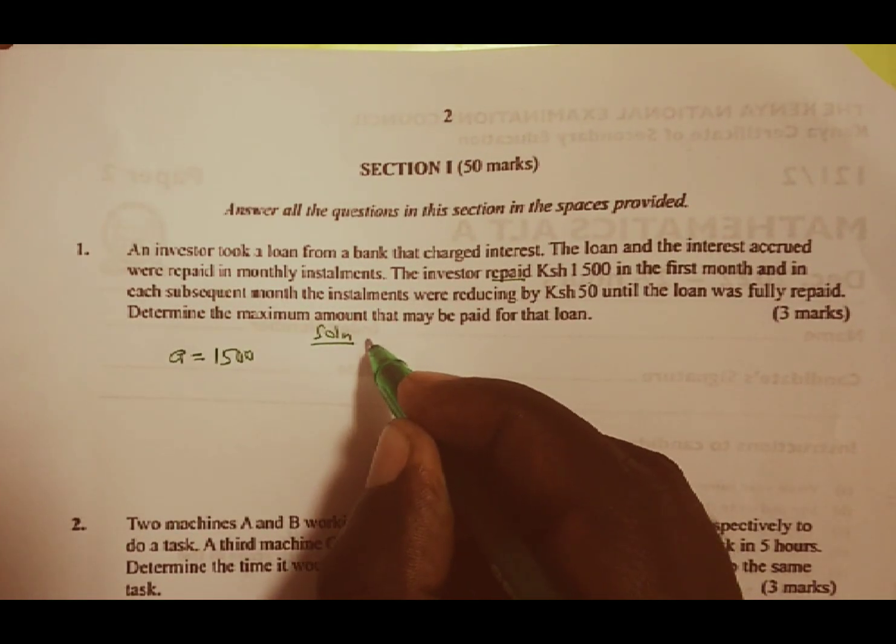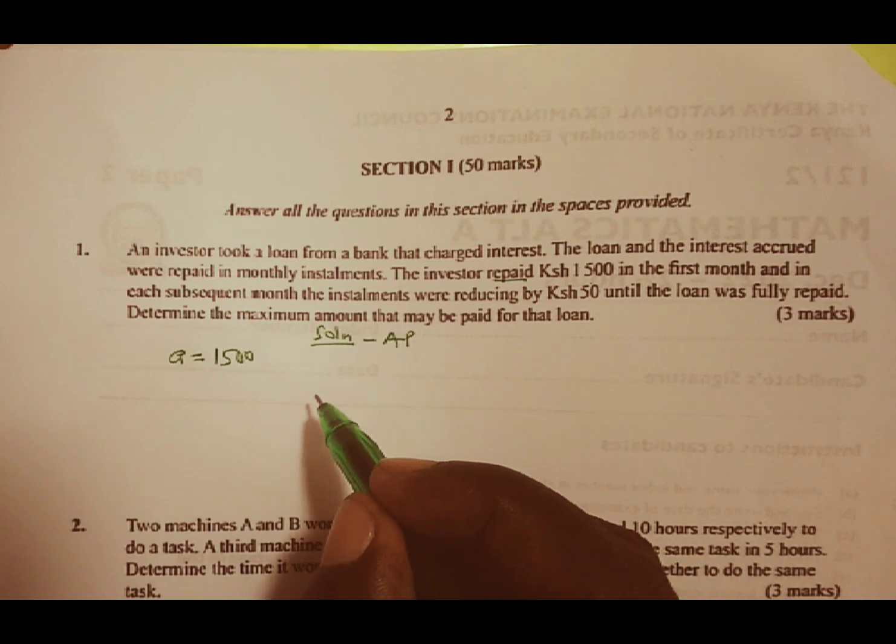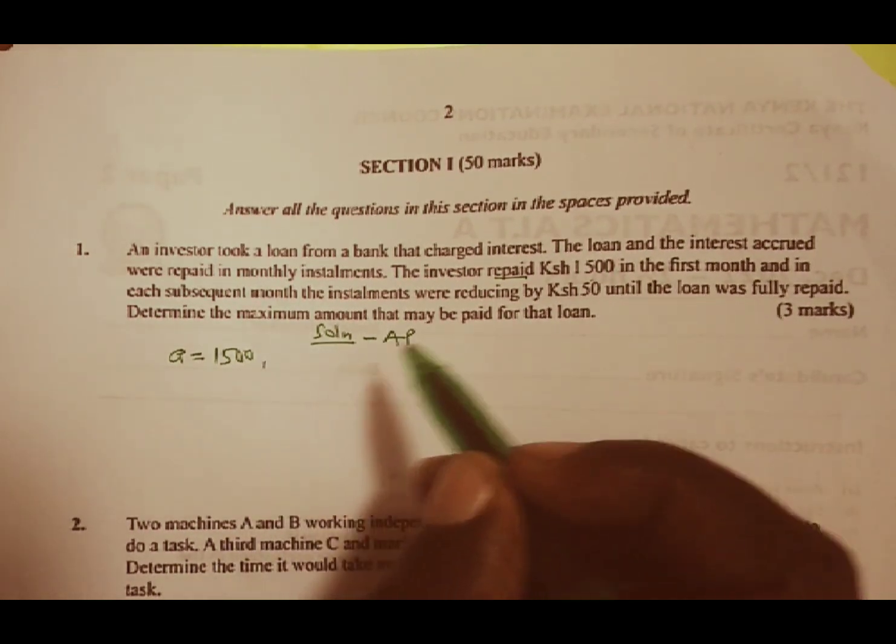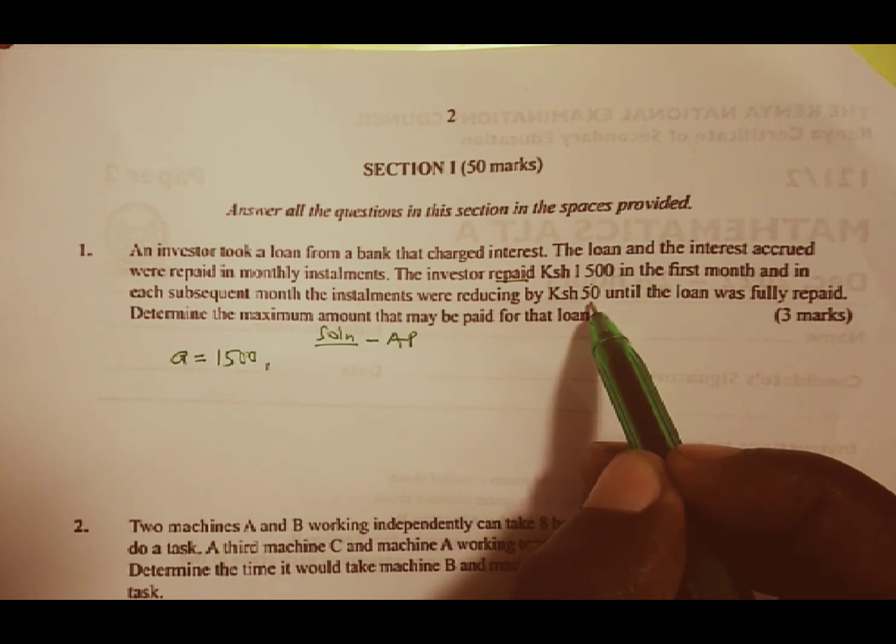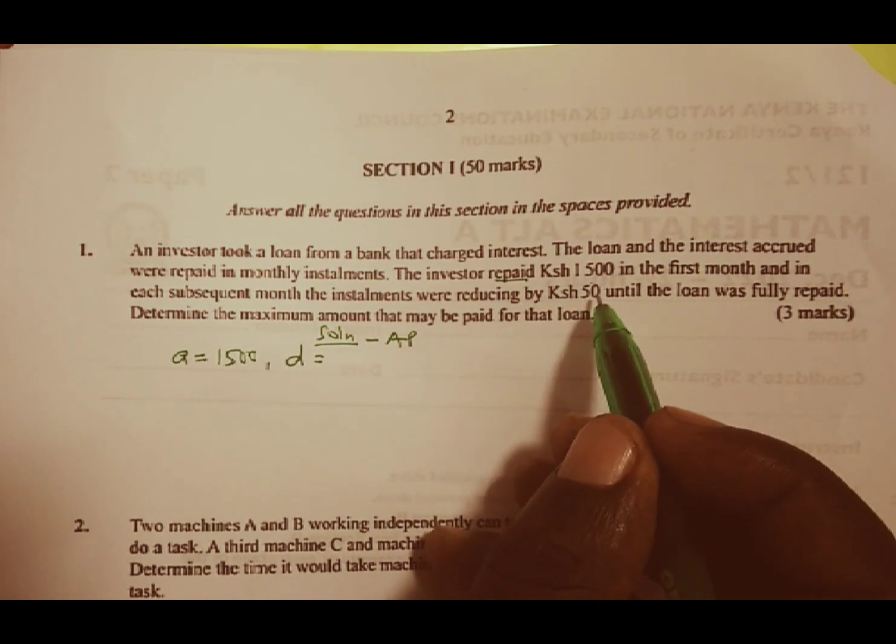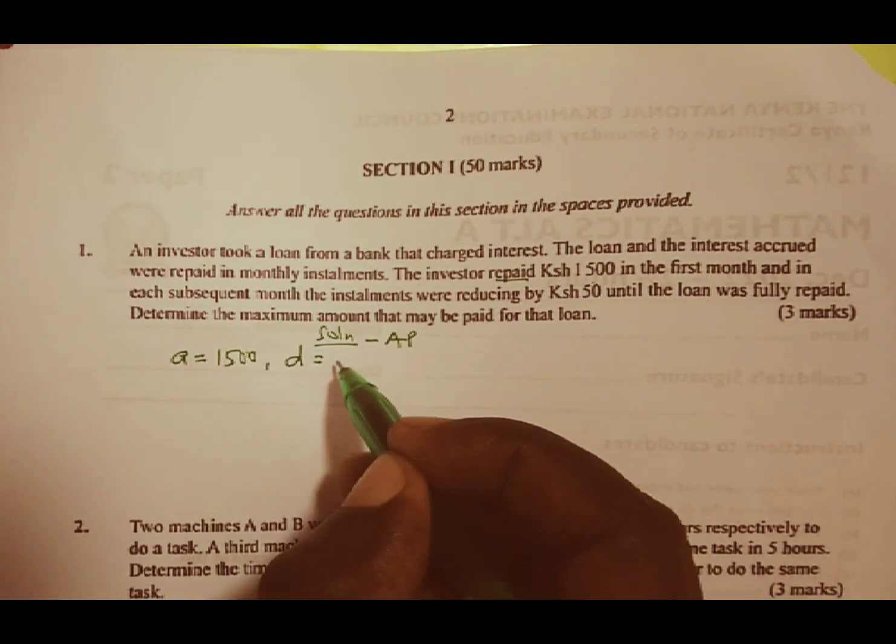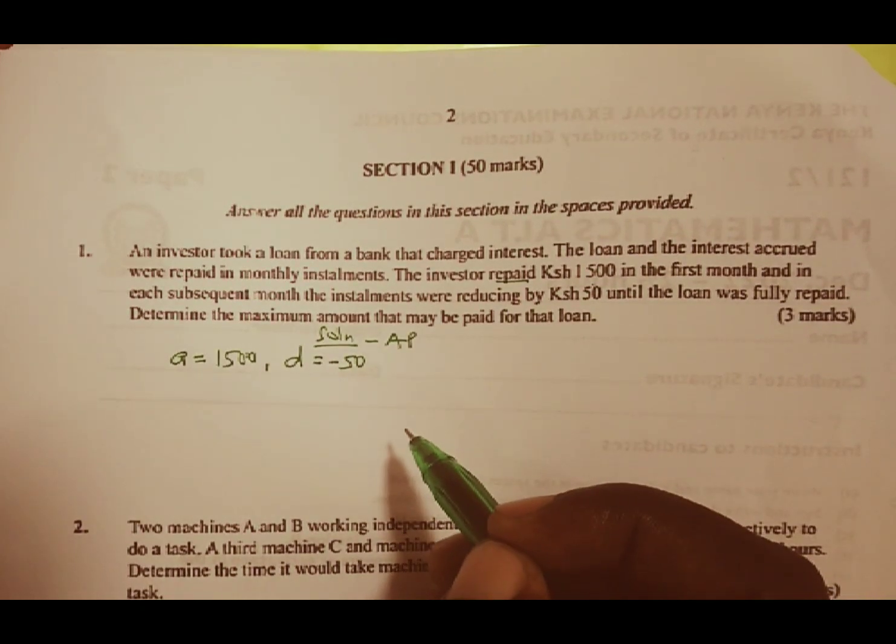This points to an AP under sequences and series. We are also told that each subsequent month the installments reduced by 50 shillings, and our common difference becomes 50. But since it is reducing, we are going to have it as negative 50.